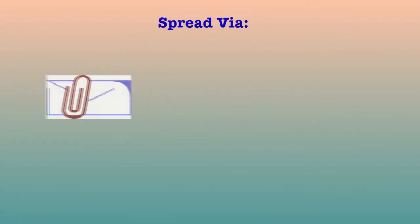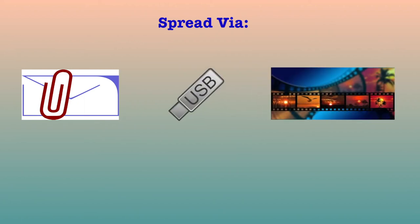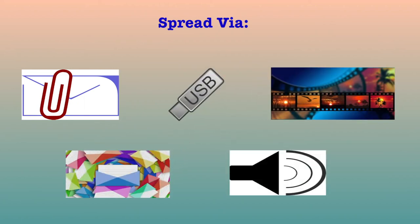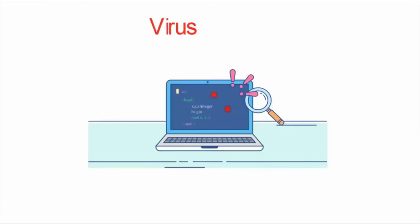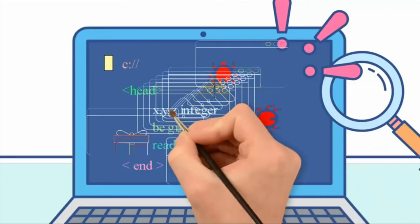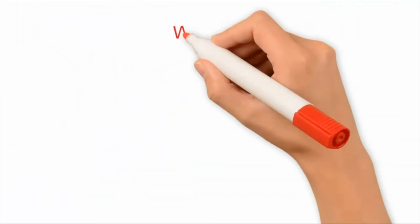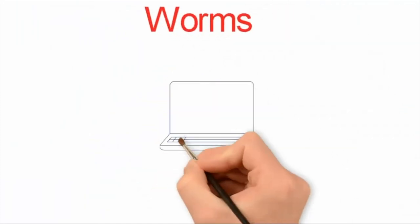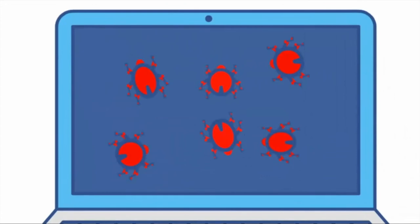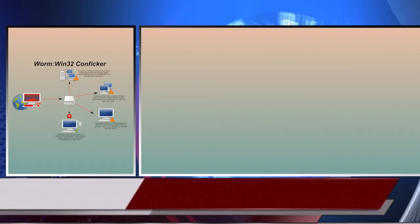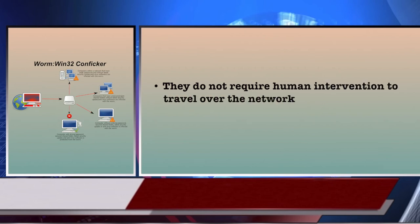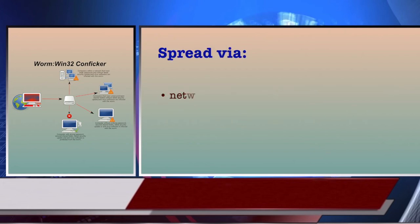A virus can be spread via email attachments, pen drives, digital images, e-greetings, audio or video clips, etc. A virus may be present in a computer but it cannot activate itself without human intervention — until and unless the executable file (.exe) is executed, a virus cannot be activated. The next category is worms — they are a class of virus which can replicate themselves. They are different from viruses in that they do not require human intervention to travel over the network and spread from the infected machine to the whole network. Worms can spread either through network loopholes in the operating system or via email.